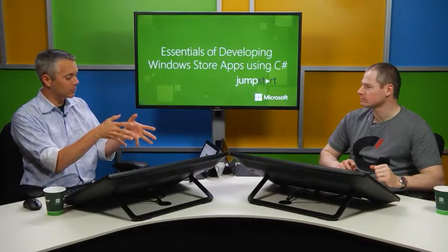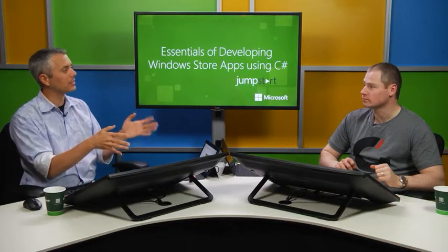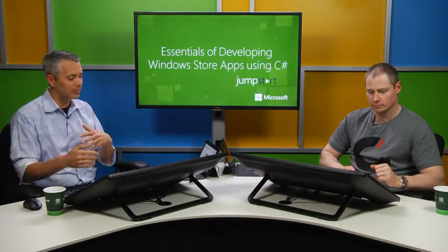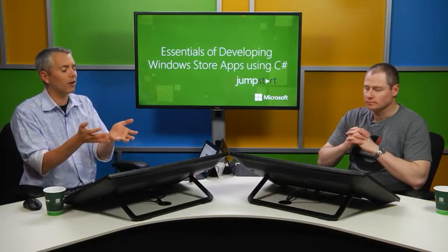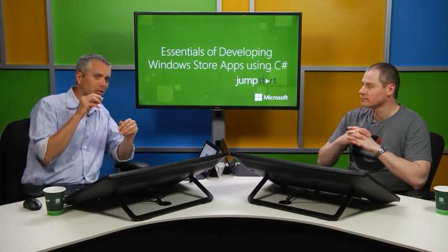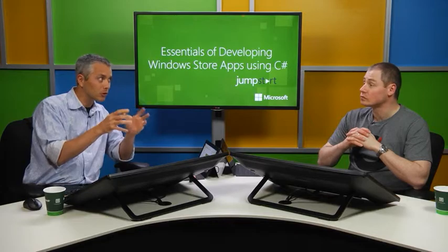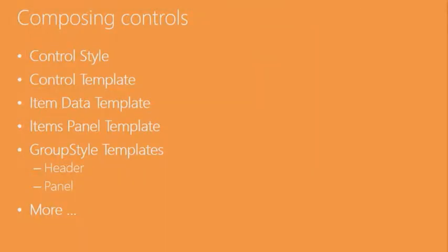We talked a little bit about styles and hinted about templates. The power around XAML with templates is that it allows us to compose our controls to look the way we want them to look. We can inherit from a control to override its behavior, but right now we're talking about overriding its template — overriding the way it looks. That's the control template. You can set the template property of any control to be a control template, and from that point forward you're really influencing the visual tree.